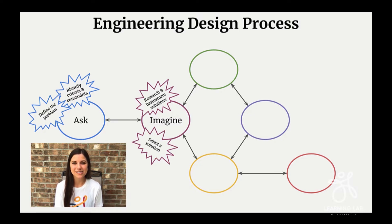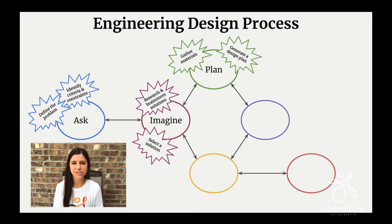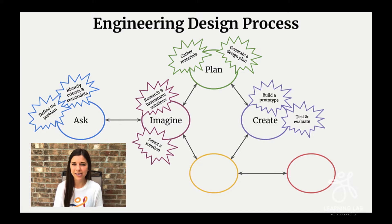At this point you select your solution, and after you have it selected, you get to start planning it out. In the plan stage, you create a very detailed design plan. In your design plan, you'll probably want to draw a model with labels, and also include a list of the materials that you might need for the next step, which is to create. Once you have that list of materials, go ahead and gather them, because you're going to start building your prototype.